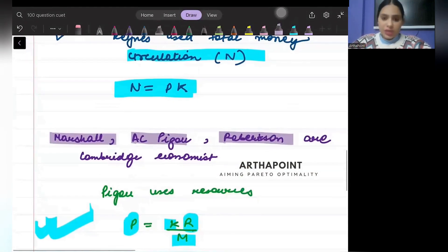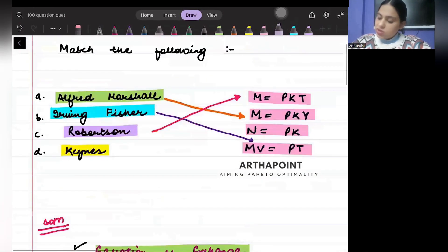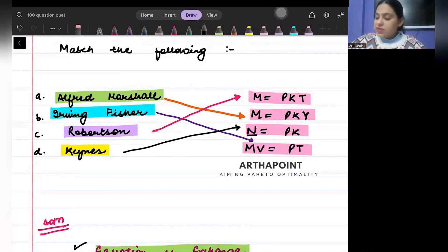So I hope this is clear to you. Keynes can be marked to the total money in circulation represented with N, and that is the correct answer to this question. Okay, thank you.